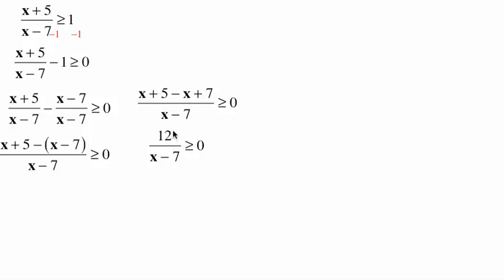You might think this is a bad thing, but it's a good thing — it makes everything so much easier. Instead of having two expressions where we have to find when it changes from negative to positive, we're just looking at the one expression. The denominator is going to change, because 12 is always 12 — it's always positive. So we don't have it changing back and forth from negative to positive or to undefined. We're really just interested in the x minus 7.